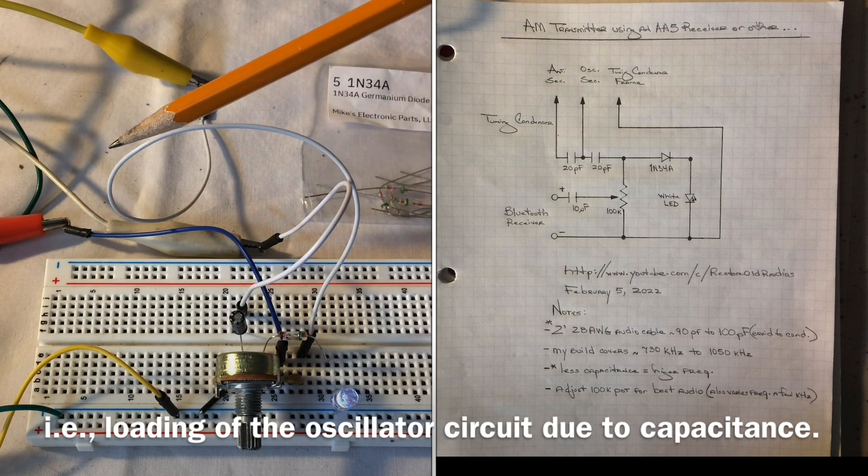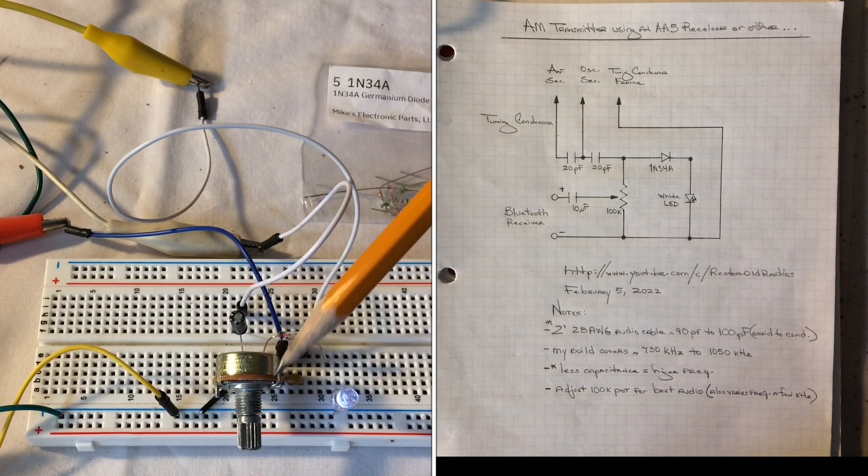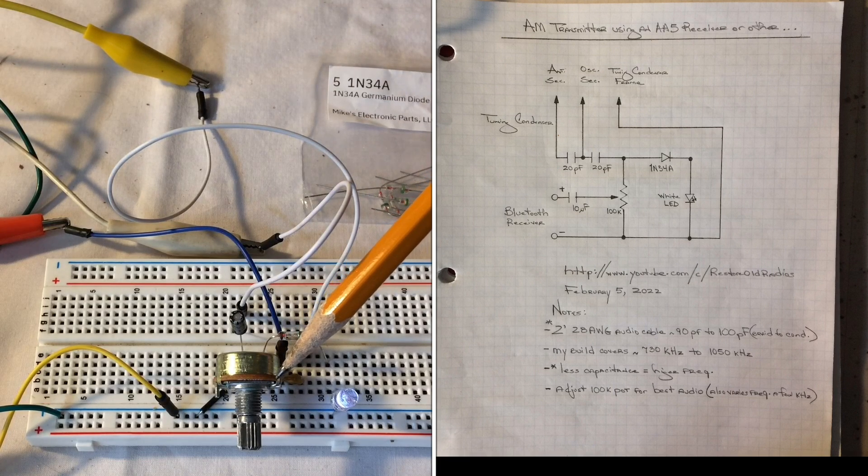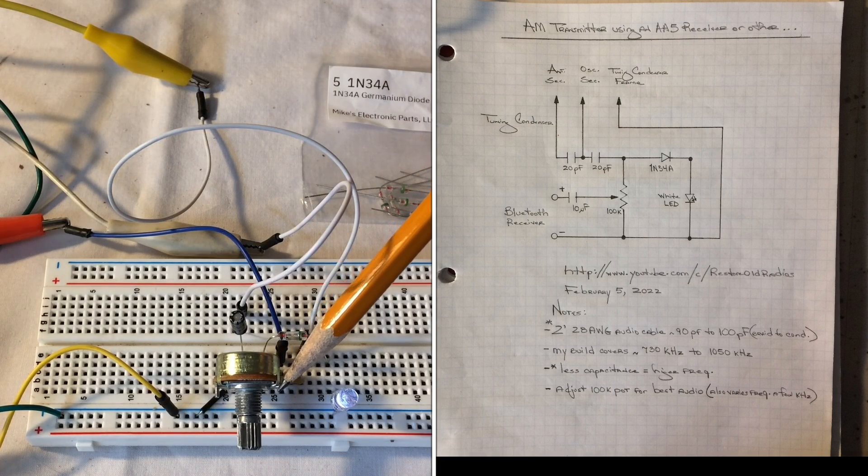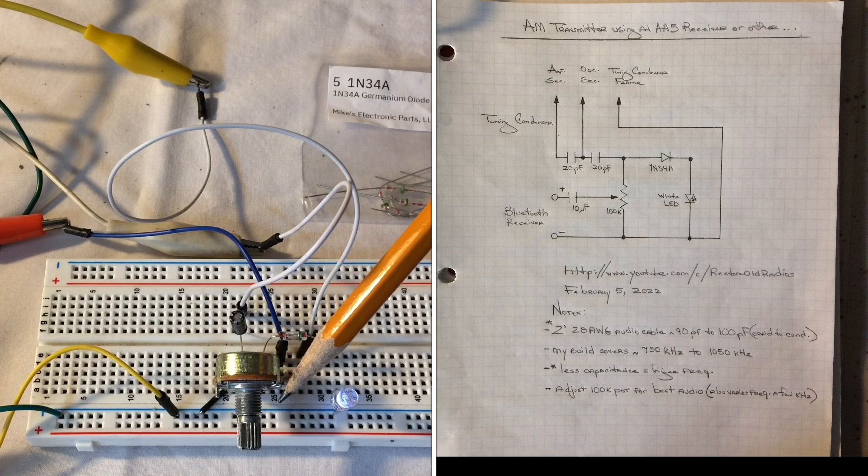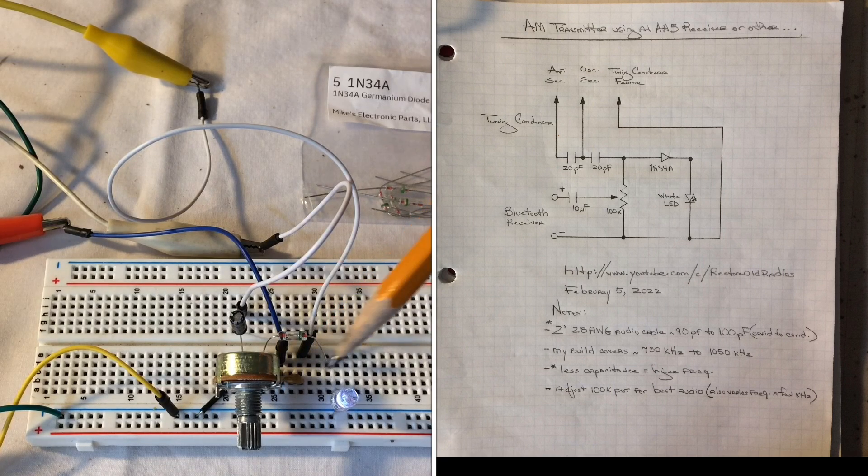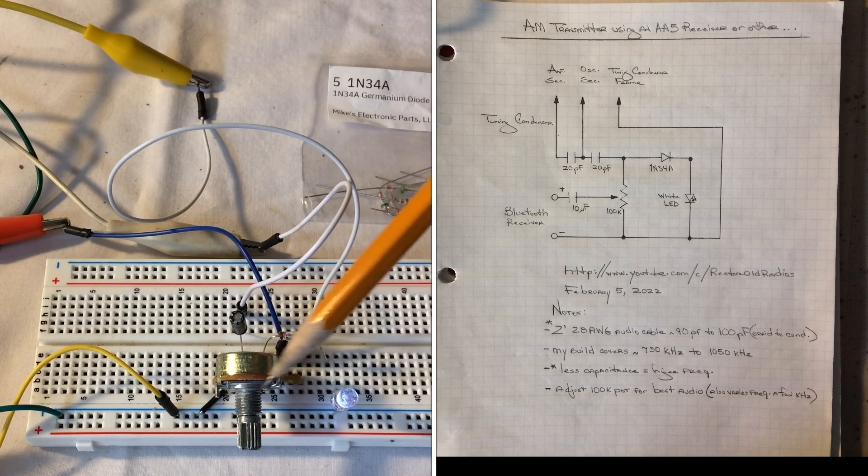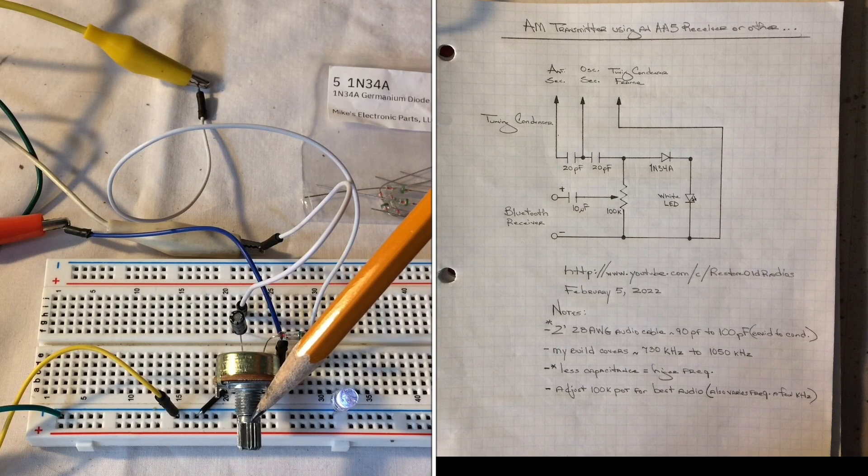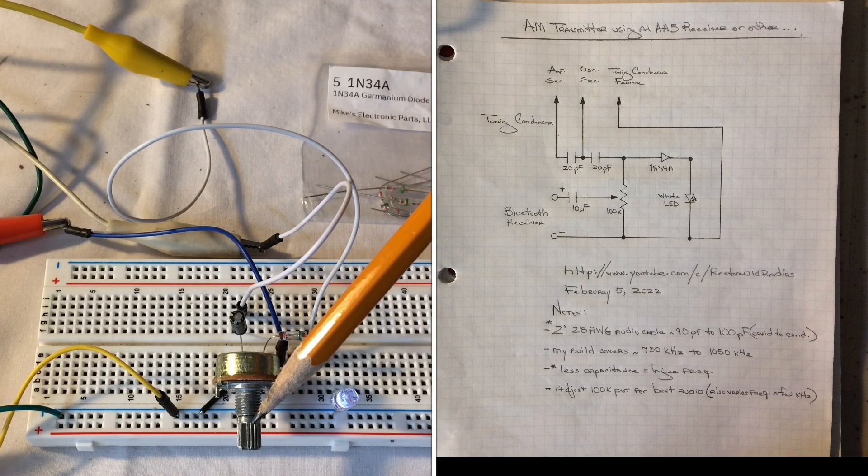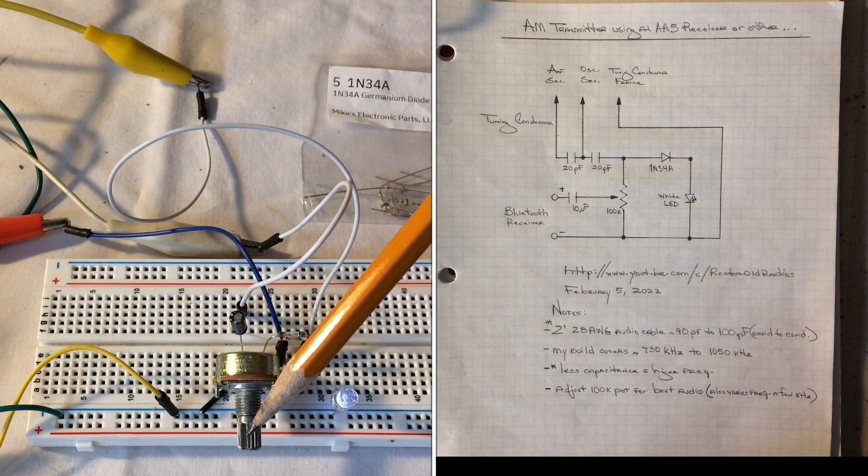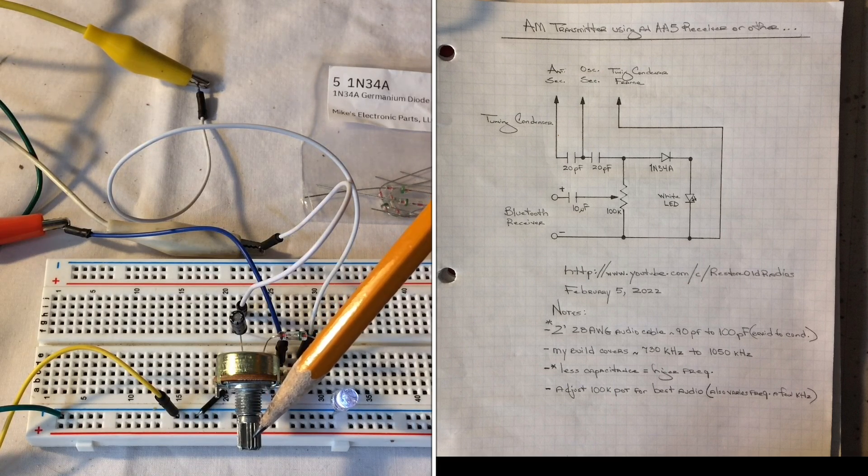We adjust the 100k pot for the best audio. It also varies the frequency a few kilohertz either direction. My input source itself is about 80% of full volume driving it from an iPad. Seems to give the best audio quality.